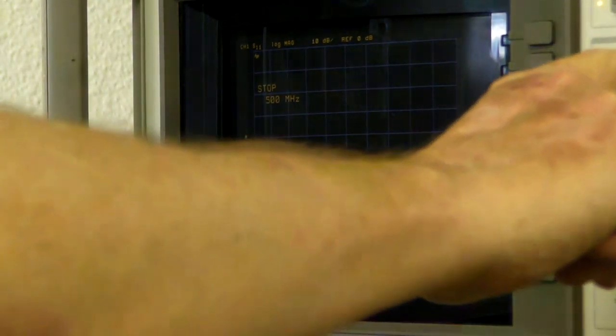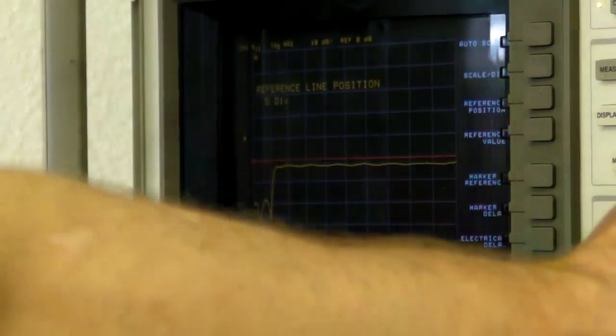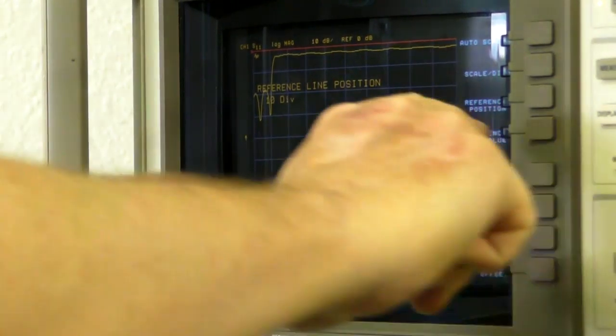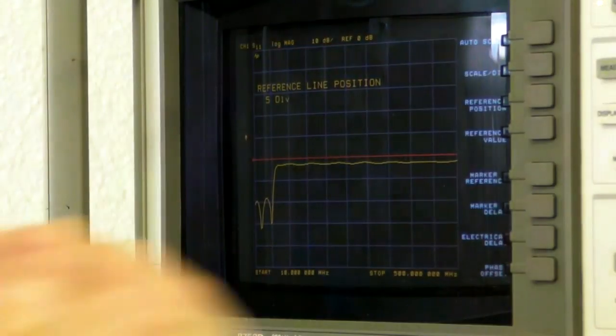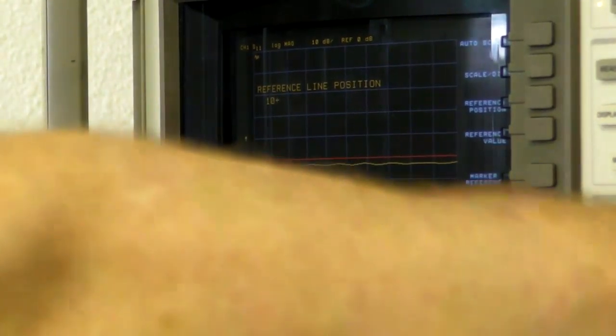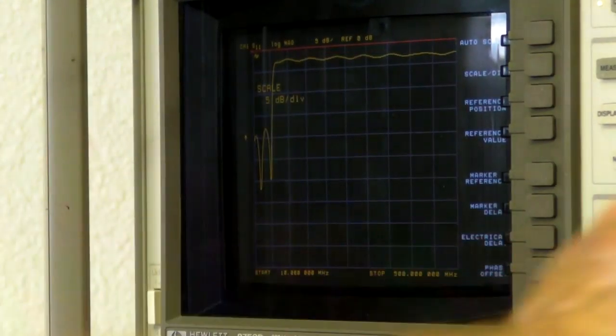It's 10 dB per division. So we'll move scale reference, we'll move the scale to the top, reference position 10, and then we'll change the scale per division to 5 dB per division.